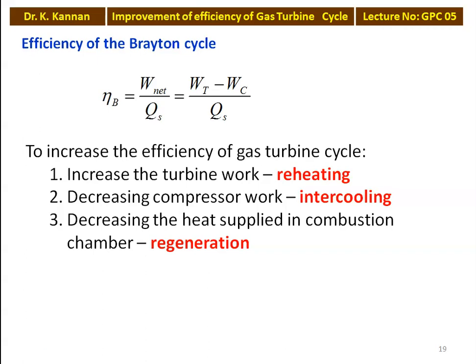With reheating, we can increase the turbine work output. Decreasing the compressor work is possible by intercooling. For a larger capacity gas turbine power plant, we have to increase the pressure ratio P2/P1, and for compressing air to a higher pressure ratio, we require multi-stage compression, which requires intercooling. Decreasing the heat supplied in the combustion chamber is possible by waste heat recovery — that process is called regeneration.